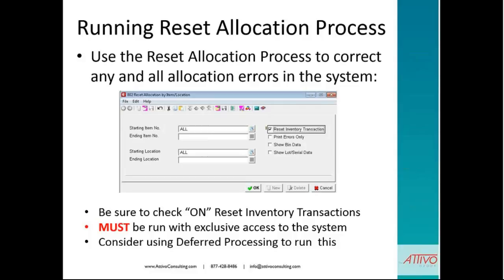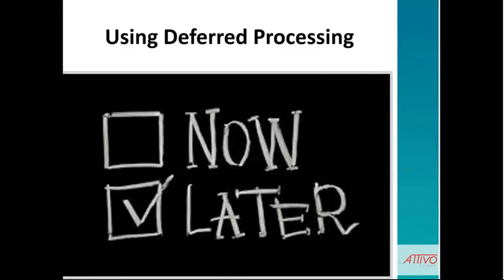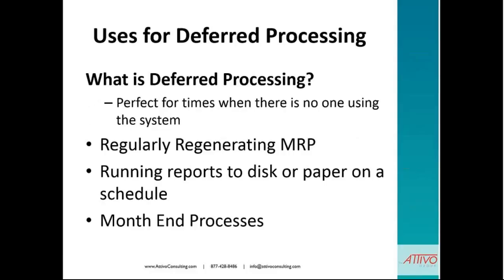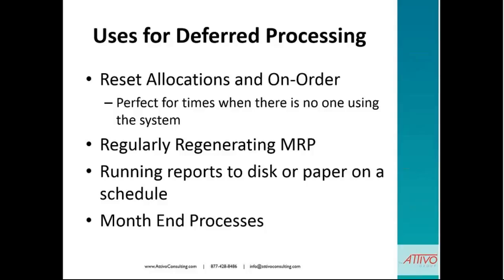Now let's take a look at using deferred processing — do we want to run it now or later? Deferred processing is a built-in utility in all versions of Macola. It allows for certain processes or reports to be run at a scheduled time. We determine when we want those processes or reports to run, what time we want them to run, and the frequency. It also facilitates scheduled unattended processing. Uses for deferred processing include resetting allocations and on-order quantities — perfect for times when no one is using the system. It can also be used for regularly regenerating MRP, running reports to disk or paper on schedule, and during month-end processing.